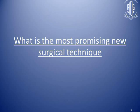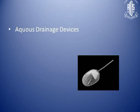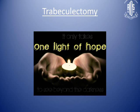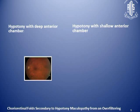What are the most promising newer surgical techniques we presently have? The current most popular surgical option is trabeculectomy with or without mitomycin, ologens, and aqueous drainage devices. Trabeculectomy is the only hope which most surgeons consider. The surgical outcome of glaucoma surgery is either effective control of intraocular pressure, or complications like hypotony that can lead to a shallow or flat anterior chamber.